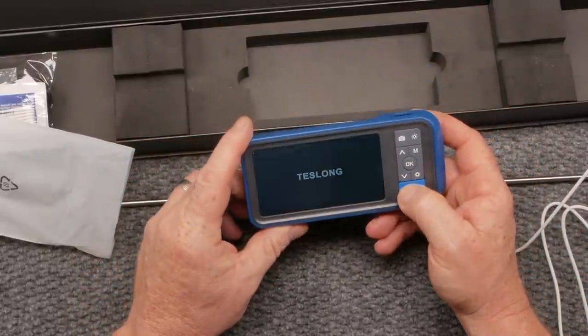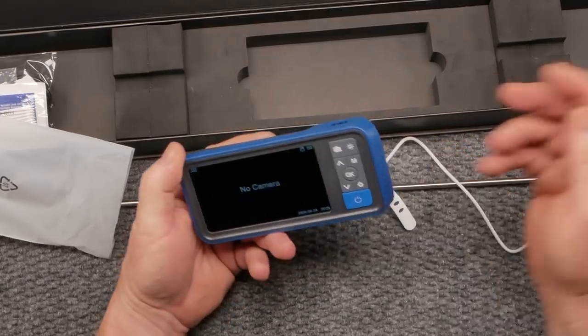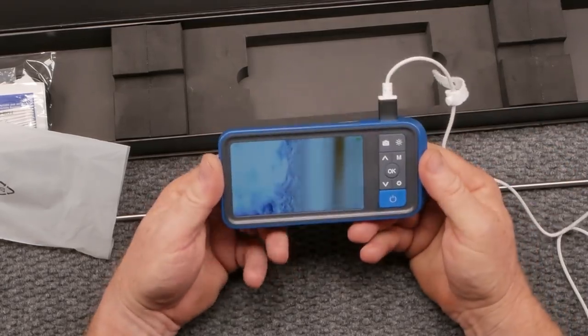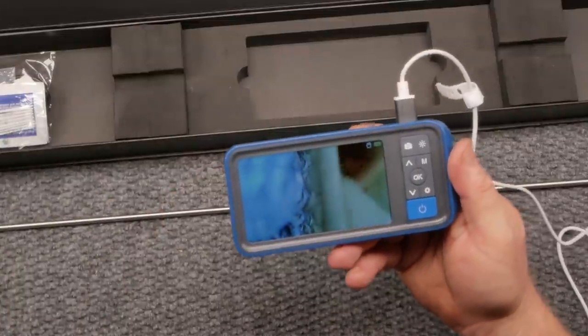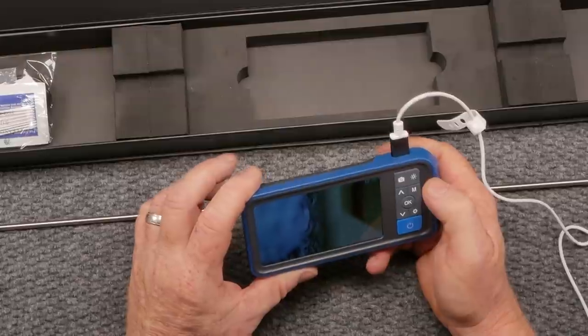So let's go ahead and turn this thing on and see what happens. Now you can see it says Teslong right here, no camera. So all you gotta do is take this thing right here and you attach it there until it clicks and voila, there's your camera. It's hooked up.